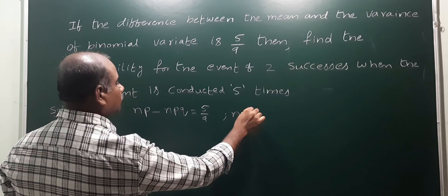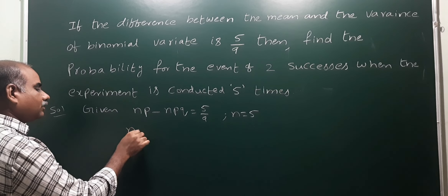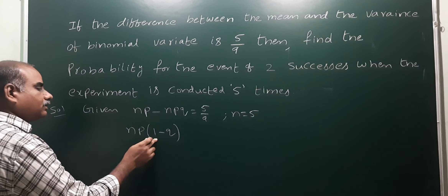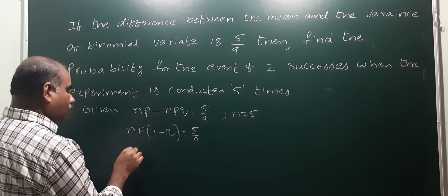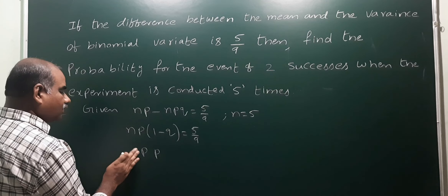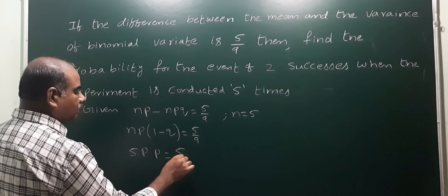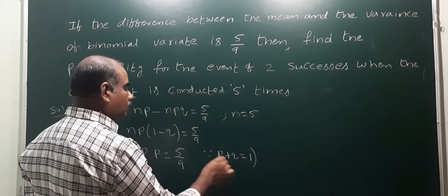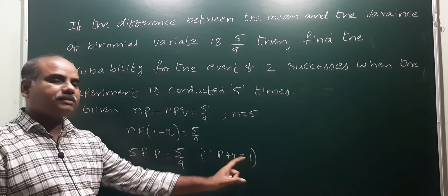Since n is equal to 5, we can factor np common from np minus npq, giving np(1 minus q). Since 1 minus q equals p, we have np times p, which is np squared, equal to 5/9. Substituting n equals 5, we get 5p squared equals 5/9.